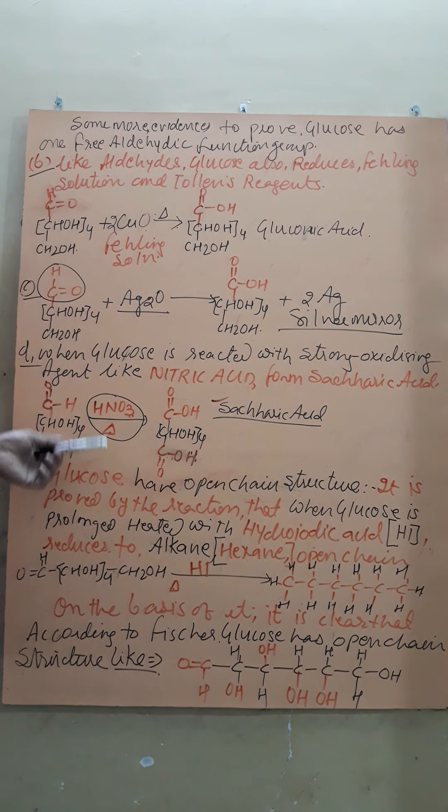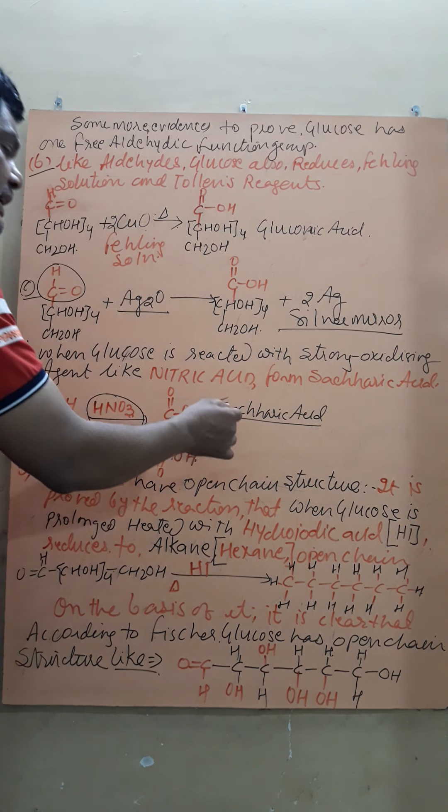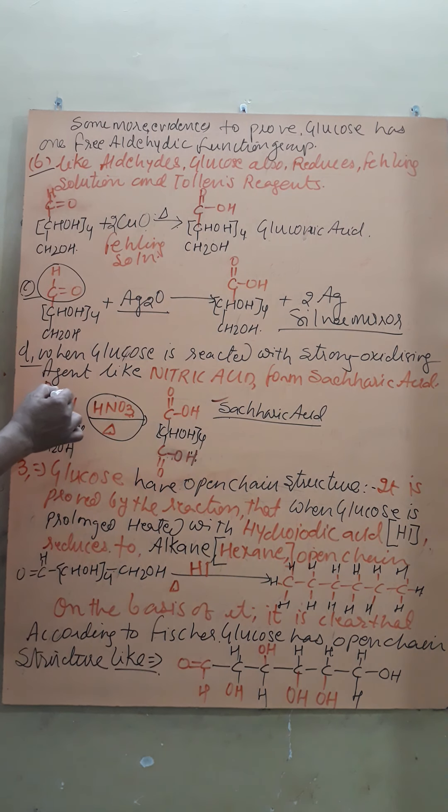Similarly, when nitric acid and glucose are reacted, it forms saccharic acid. Here, the glucose aldehyde is converted into carboxylic acid. Similarly, the primary alcoholic group is also converted into carboxylic acid. This is the property of nitric acid that it can oxidize primary alcohol into carboxylic acid.